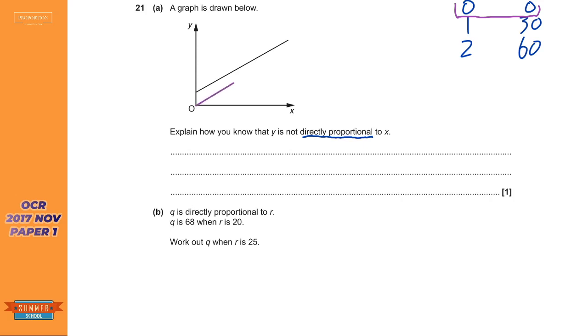So direct proportion graph will look like this. It will start at the origin. So it says, explain how you know Y is not direct proportion to X. You just need something like, it does not go through, and you could say the origin or zero, zero. It has to be direct proportion. The other thing it needs to do needs to be as a straight line, which it is. So if it's a straight line and it goes through the origin, then the two things are directly proportional.